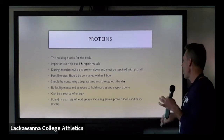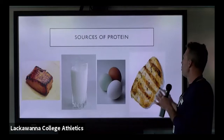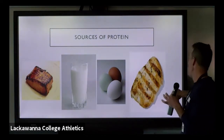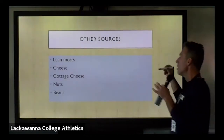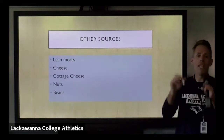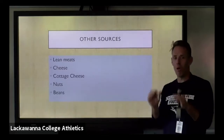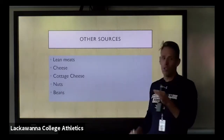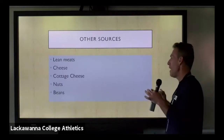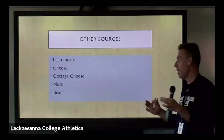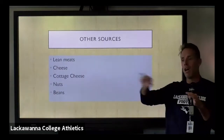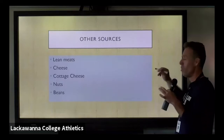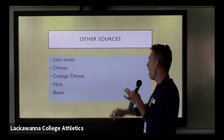Proteins are found in a variety of food groups — grains, protein foods, and dairy groups. Good sources of protein include fish, dairy products, eggs, and grilled chicken. Other sources: lean meats, cheese, cottage cheese — which is a very underrated source of protein. Nuts are a good source, but you'd need to eat a lot to meet your daily protein needs, so use them in combination with cottage cheese or yogurt. Beans are also a source of protein.